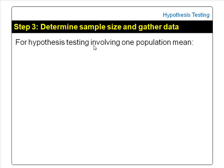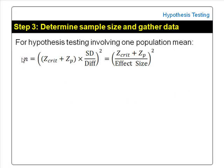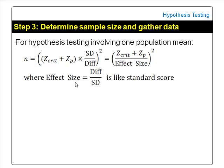The formula to estimate the sample size for hypothesis testing involving one population mean is shown here. The difference you wish to detect should be of practical or clinical significance. Effect size is the difference you wish to detect divided by standard deviation — note it is divided by standard deviation, not standard error. Effect size is a standard score indicating the difference in number of standard deviations.